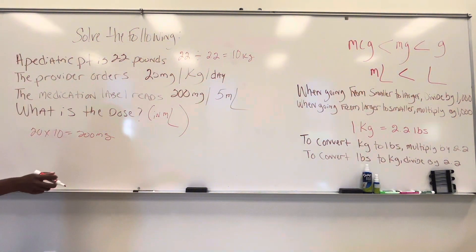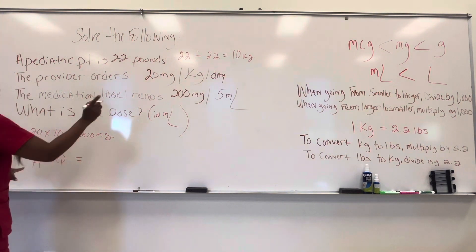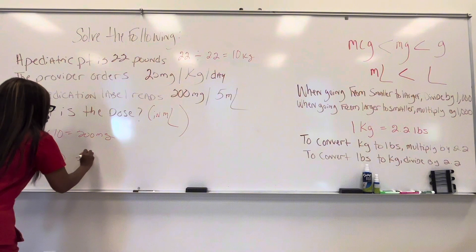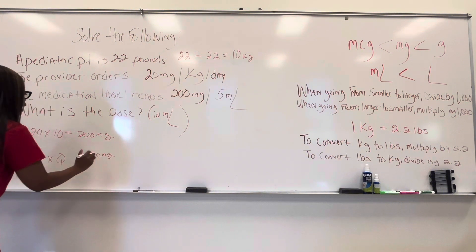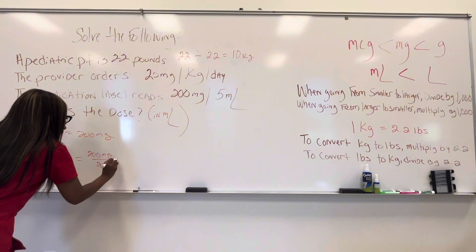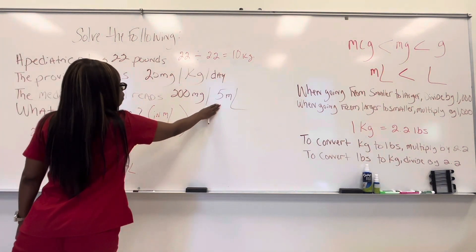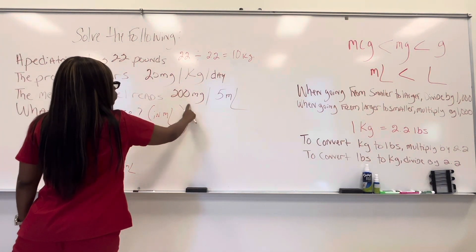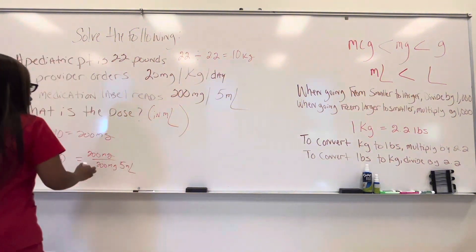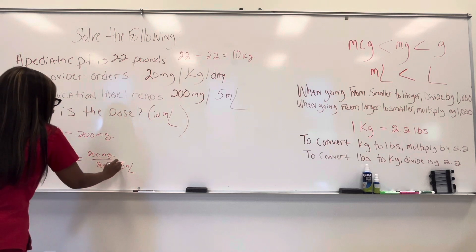Now, I just want to take us back to that formula that we learned in the first video, which is what? The D over H times Q. That's our formula, right? So what's the D? That is what the doctor wants. We know now that it's 200 milligrams that the doctor wants. Divide by what we have on hand, that is 200 milligrams, right? Per 5 ml. Now, for every 5 ml of this medication, there are 200 milligrams, right? So that 5 is the quantity, right? So D over H times Q is the quantity.